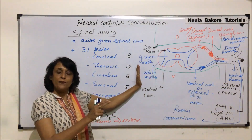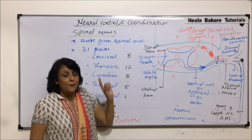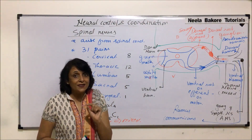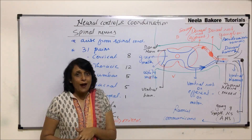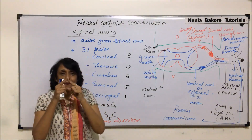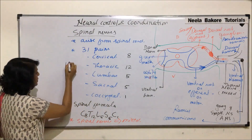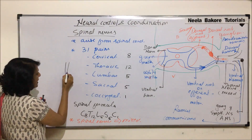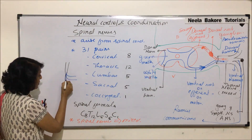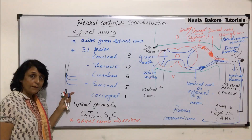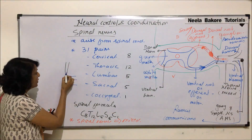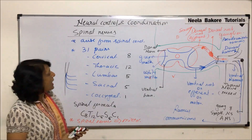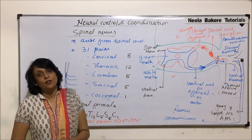This is how all 31 pairs arise. However, the spinal cord only extends up to the first lumbar vertebra; after that, it changes into a non-nervous part. The nerves still arise from that part, but they leave the vertebral column at their corresponding area. So the fiber arises from the spinal cord but emerges from its specific vertebra or vertebral pair. This is how the 31 pairs of spinal nerves are organized.